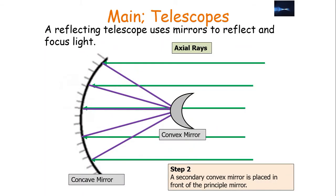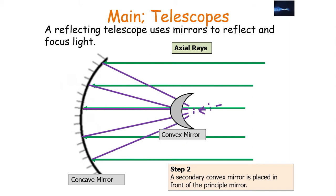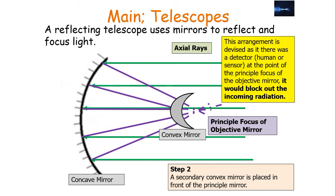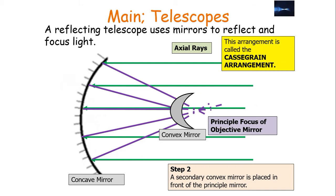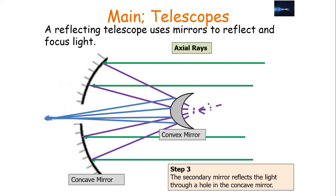Once the primary mirror has reflected radiation to a principal focus, a secondary convex mirror is placed in front of the primary mirror. The secondary mirror is placed slightly ahead of the principal focus of the objective mirror. This arrangement is necessary because if a detector — whether a human or sensor — were placed at the principal focus of the primary mirror, it would block out the incoming radiation. So we have this Cassegrain arrangement to prevent the detector from blocking some of the incoming radiation.